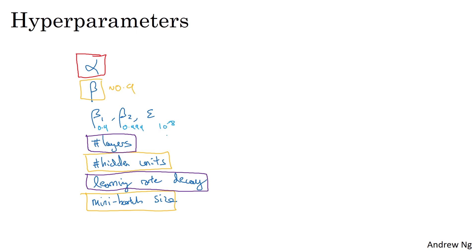Although you can try tuning those as well if you wish. But hopefully this gives you some rough sense of what hyperparameters might be more important than others. Alpha, most important for sure. Followed maybe by the ones I've circled in orange, followed maybe by the ones I circled in purple. But this isn't a hard and fast rule, and I think other deep learning practitioners may well disagree with me or have different intuitions on these.